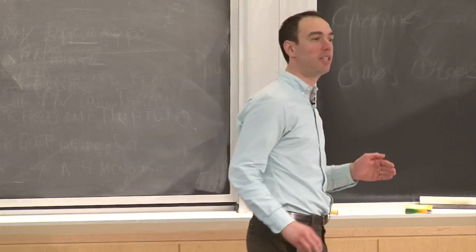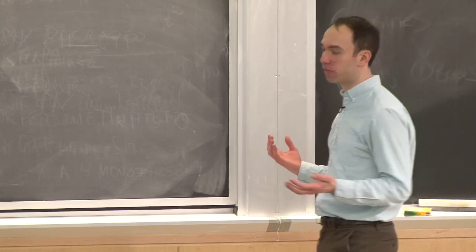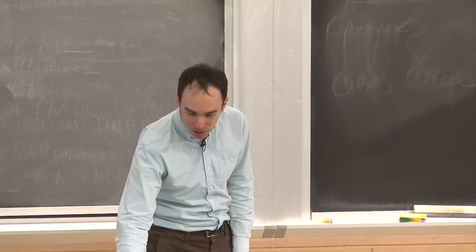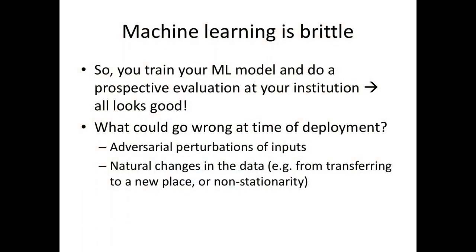Today's lecture is about dataset shift, specifically how one can be robust to dataset shift. This is a topic we've been alluding to throughout the semester. The setting to think about: you're a data scientist working at Mass General Hospital, and you've been very careful setting up your machine learning tasks to make sure the data is well-specified and the labels you're trying to predict are well-specified. You train on your training data, test on a held-out set, and see that the model generalizes well.